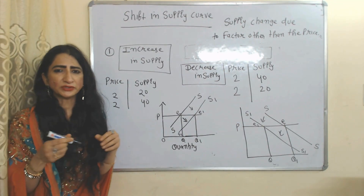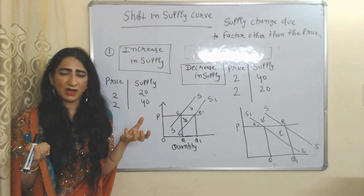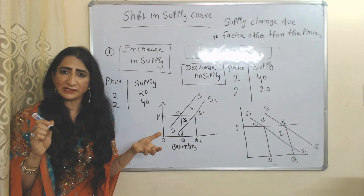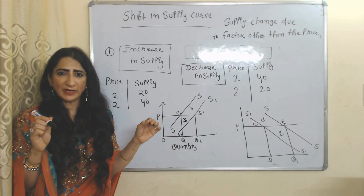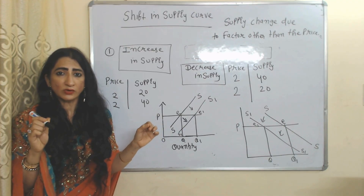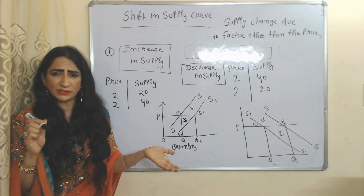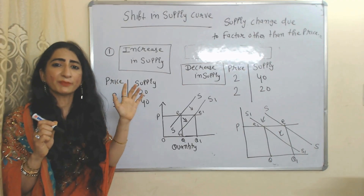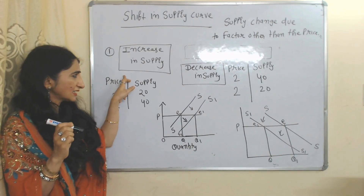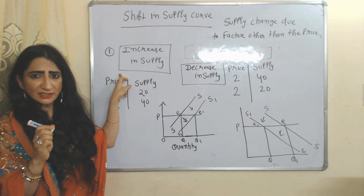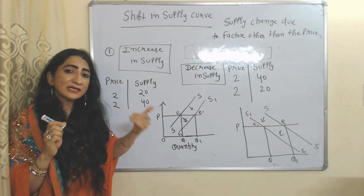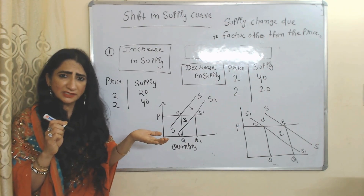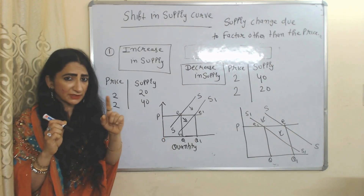Now we are going to talk about the shift in the supply curve. A shift in the supply curve occurs not because of a change in price but because of some other factor which changes supply. There may be some other factor — it can be government policy or technology, but not price — which changes supply, causing the supply curve to shift.